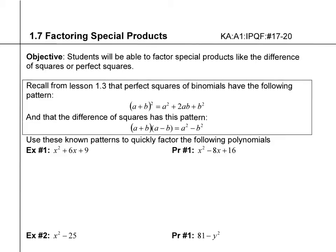Recall from lesson 1.3, we said if you have a perfect square binomial, it follows this pattern. And if you have a difference of squares, it follows this pattern.